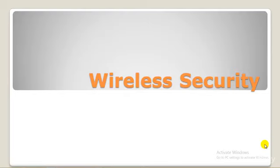Hey guys, welcome to the next tutorial of ethical hacking and penetration testing. We are on Kali Linux. Even if you knew how to secure your Wi-Fi network and have already done so, you probably find all the encryption acronyms a little bit puzzling. Today I will highlight the differences between encryption standards like WEP, WPA, and WPA2, and why it matters which acronym you choose for your home Wi-Fi network.